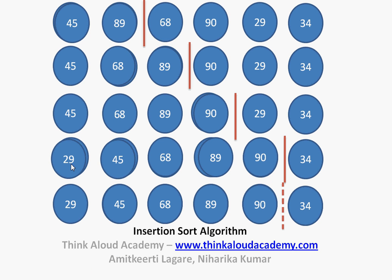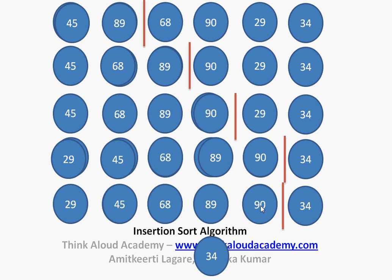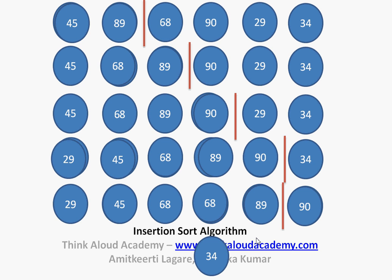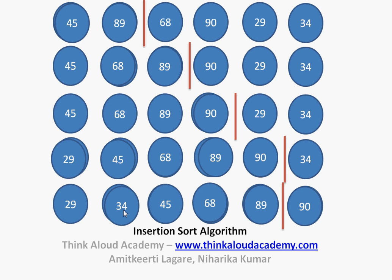By this round we have all these elements already sorted to the left of the bar and the only element left is 34. We make a copy of 34 and realize that 90, 89, 68, and 45 are all greater than 34, so we push each of them to the right. Then 29 is less than 34, so we have found the position for 34 — it goes and sits in its position and the bar moves to the right. So, insertion sort inserts each element in its appropriate position.